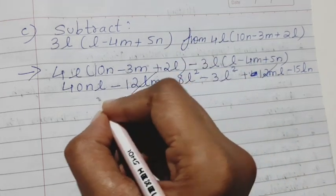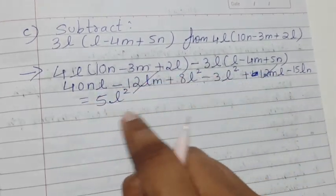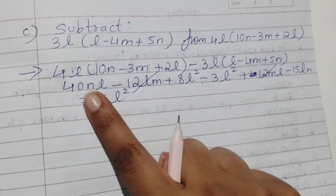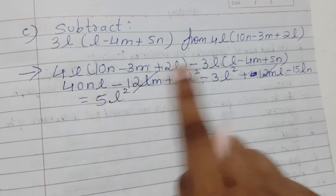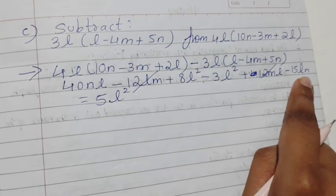So what you will get is 5l square. Okay, 5l square, 8 minus 3 is 5l square. And you'll have 40ln and 15nl, so 40 minus 15, see what answer you will get.